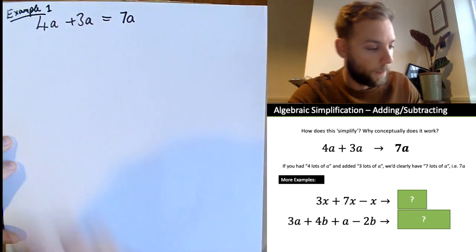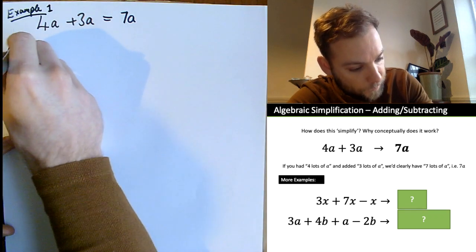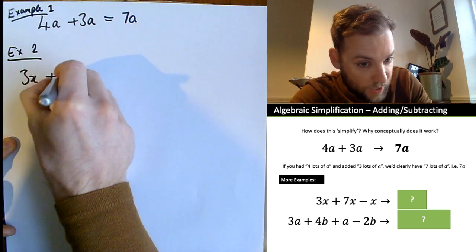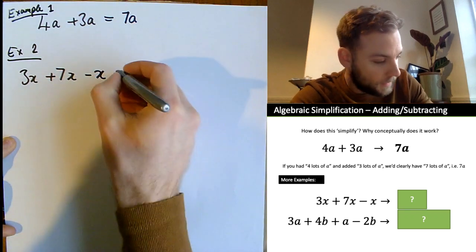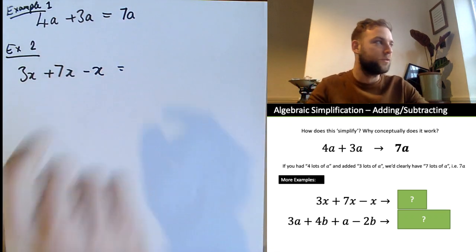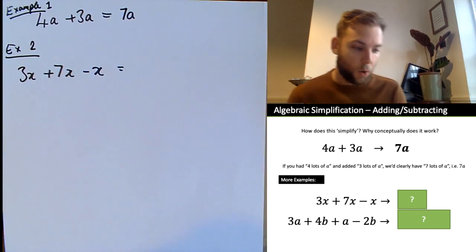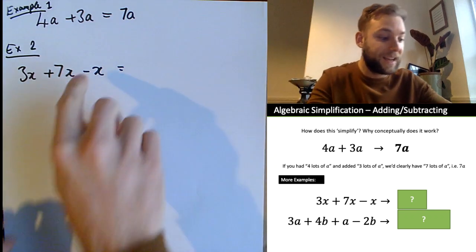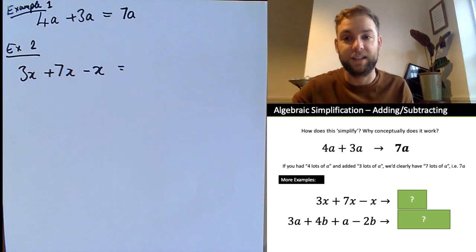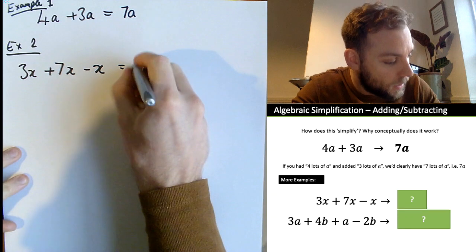Let's do some more examples. Example two: we've got 3x plus 7x minus x. Worth noting is the fact that we've got this minus x with nothing in front of it — by convention, that means one lot of x. So 3 lots of x plus 7 lots of x equals 10 lots of x, then take away one lot of x, giving us 9x.